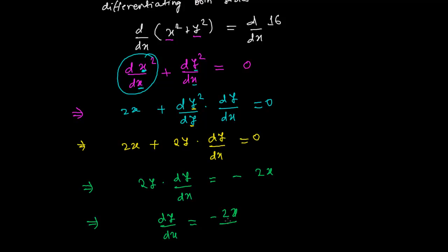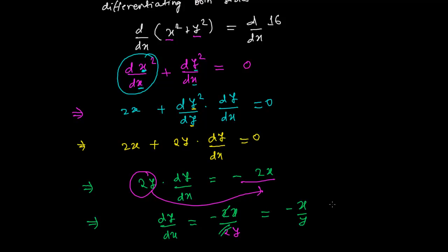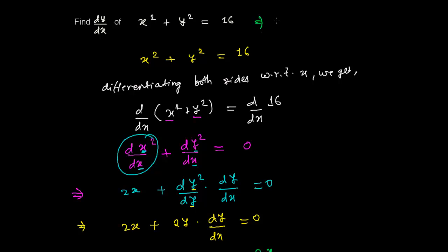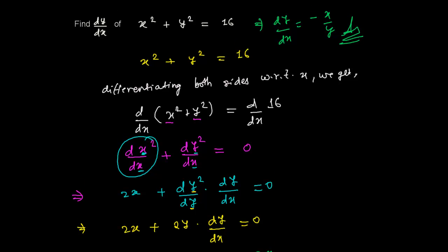In the final step, dy/dx equals −2x divided by 2y. The 2 in the numerator and the 2 in the denominator cancel out, giving us dy/dx = −x/y. So that is our answer: dy/dx = −x/y.